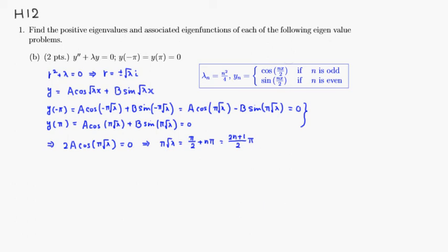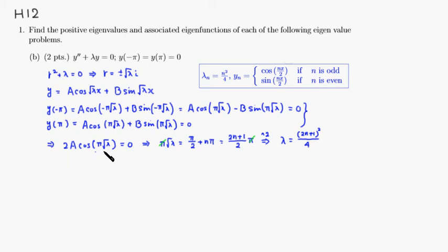You can divide both sides by pi to cancel it, then square both sides. So lambda equals (2N plus 1) squared over 4. This is the eigenvalue. Since cosine is zero here, A can be non-zero. But cosine and sine cannot both be zero at the same time, which means B has to be zero in this case. So A is non-zero and B is zero, meaning you just have a cosine term.